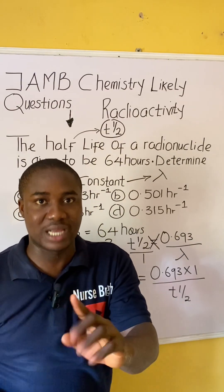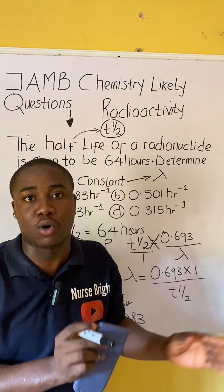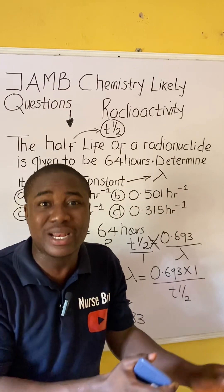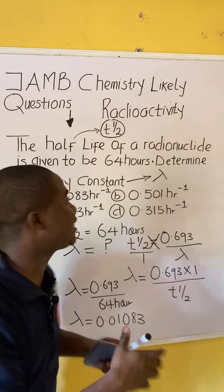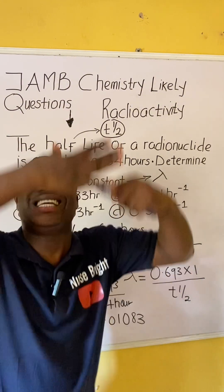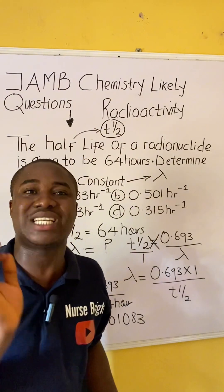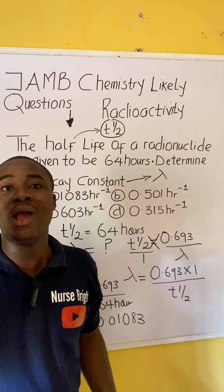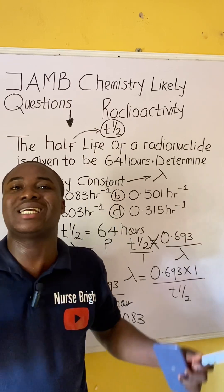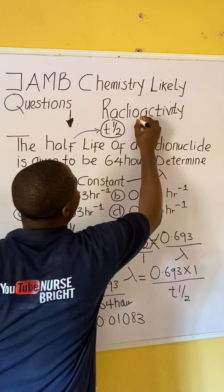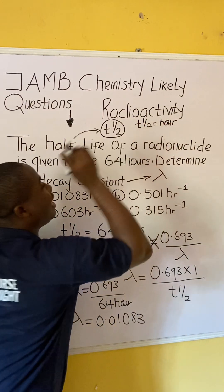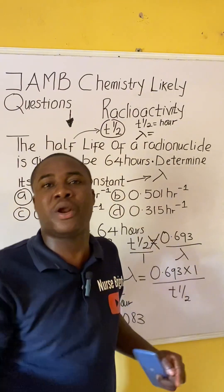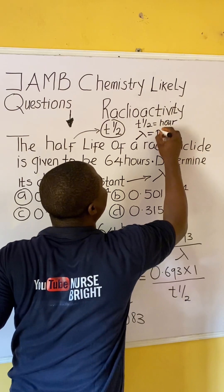Now, an important point: half-life by definition is the time in which half of a substance disintegrates — half of a substance breaks down. So half-life is time. Notice that the value was expressed in hours, and hours is a unit of time. Moving to the decay constant, the most important thing to look out for is its unit. Since half-life is basically time and was given in hours, the decay constant's unit will be a function of the half-life's unit — so decay constant will be expressed as per hour.